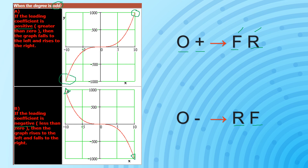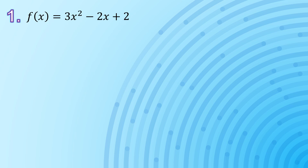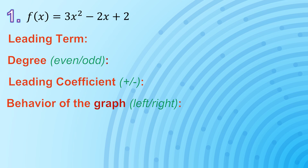So let's have an application of this idea with a couple of examples. f of x equals 3x squared minus 2x plus 2. How will the graph of this polynomial function behave — the end behavior? First, let us extract information from this given polynomial function. The leading term is the term that holds the highest degree, so the leading term is 3x squared. From this leading term, the degree is 2, and 2 is an even number. The leading coefficient is the numerical coefficient of the leading term, so the leading coefficient is 3.